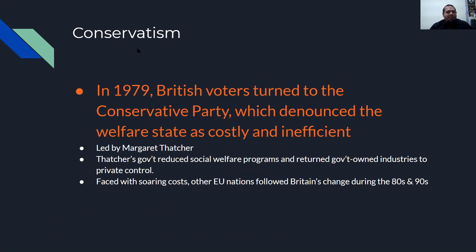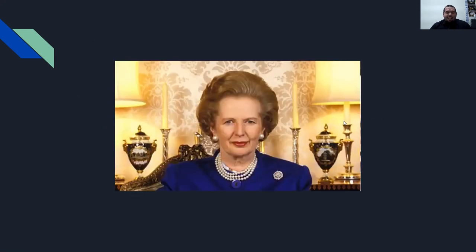Conservatism: however, in 1979, British voters turned to the Conservative Party, which denounced the welfare state as costly and inefficient. They were led by a woman named Margaret Thatcher. Thatcher's government reduced social welfare programs and returned government-owned industries back to private control. Faced with soaring costs, other European nations followed Britain's change during the 80s and 90s.